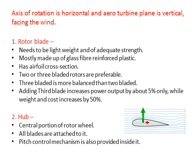The first component is rotor blade. It needs to be lightweight and of adequate strength. It is generally made up of glass fiber reinforced plastic and has an airfoil cross-section, such that wind slides over it and provides lift to the blade. There may be two or three bladed rotors. Three bladed is more balanced than two bladed, but adding a third blade increases power output by only 5% while weight and cost increase by 50%.